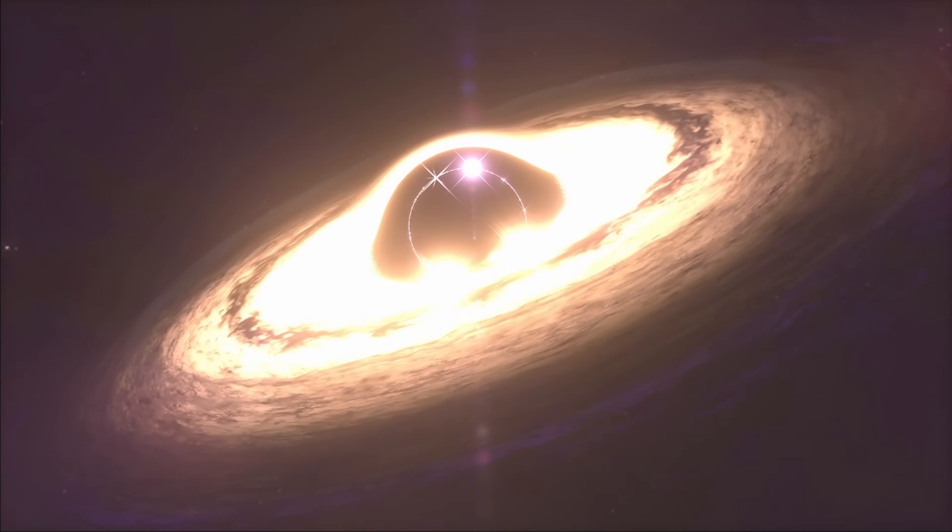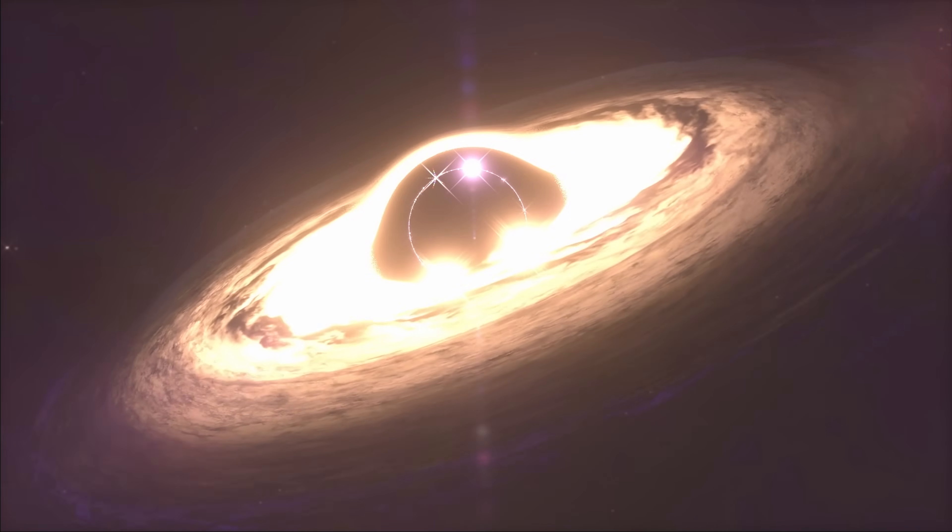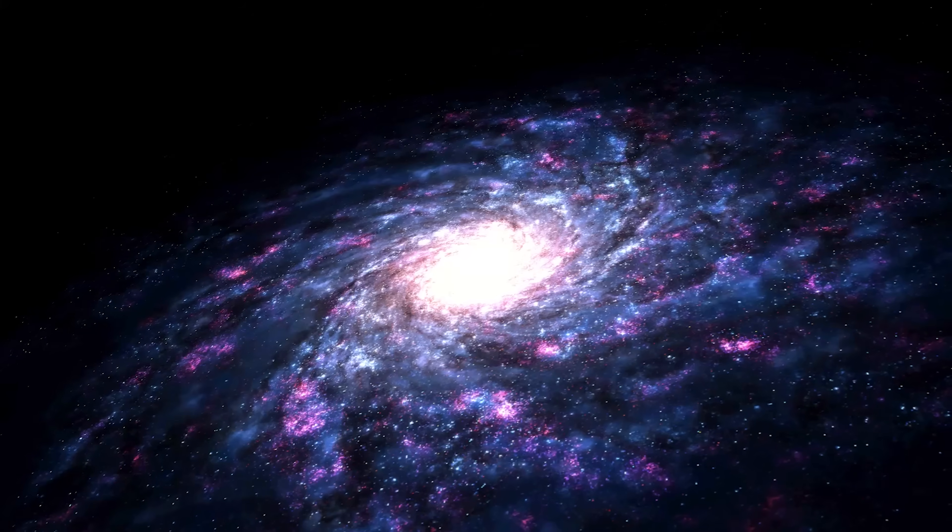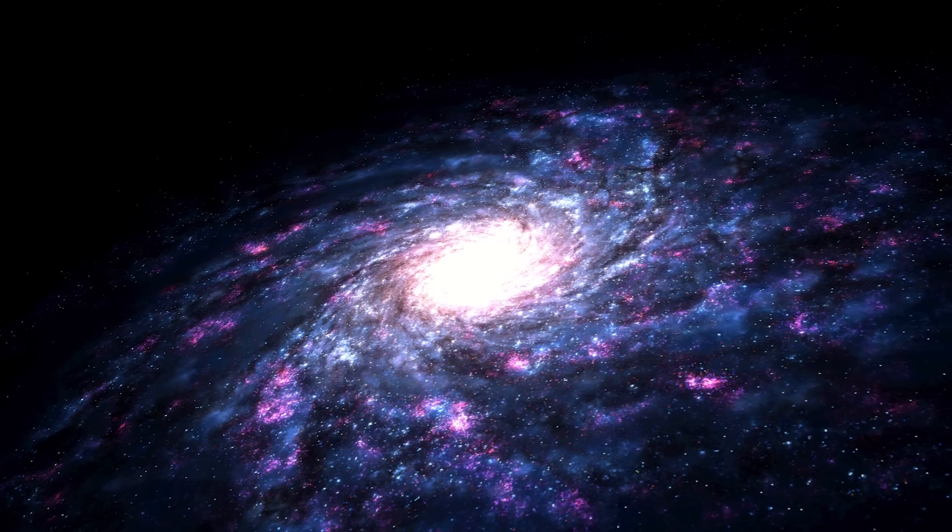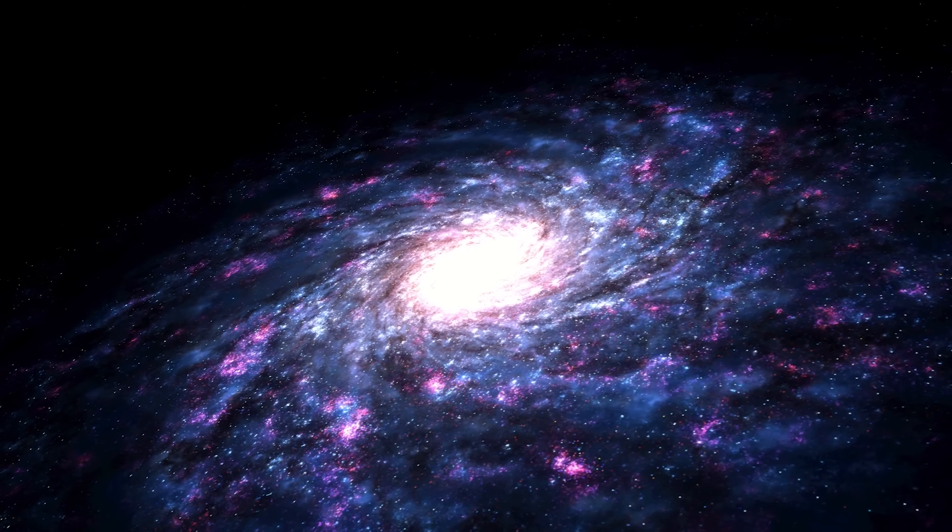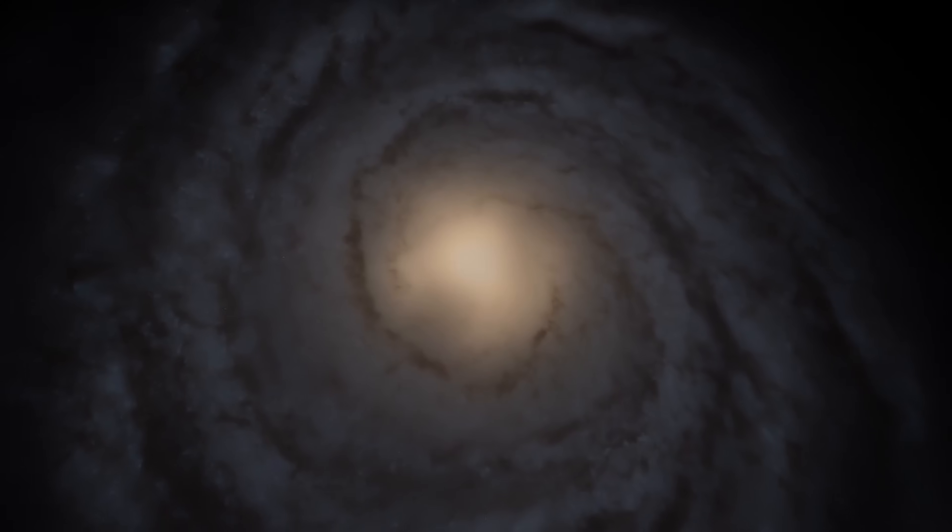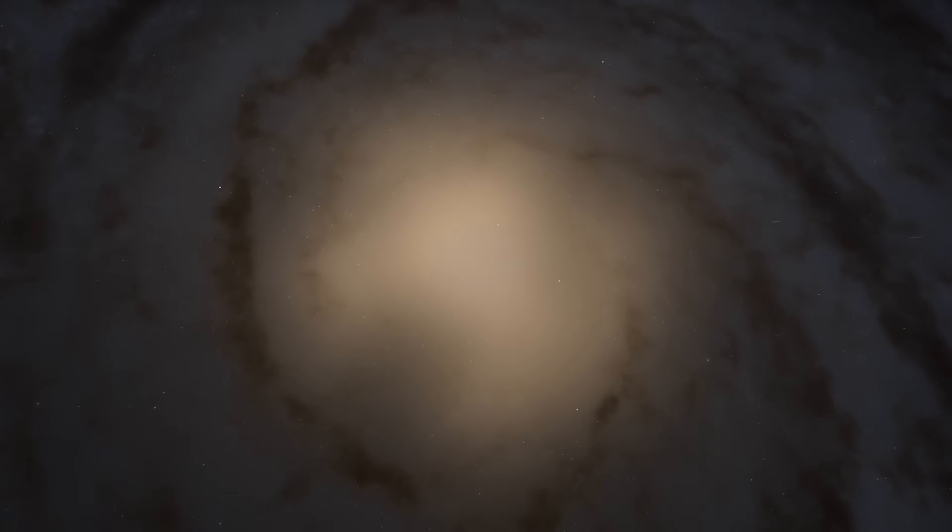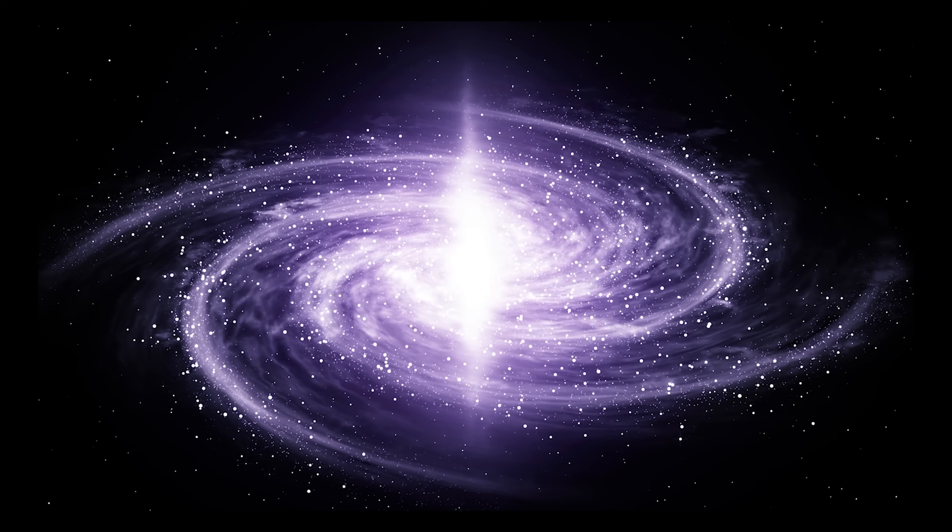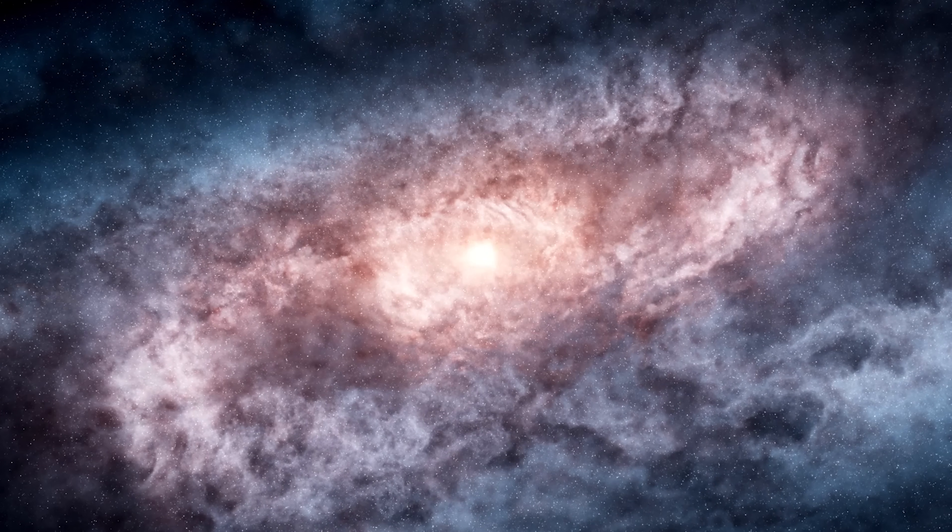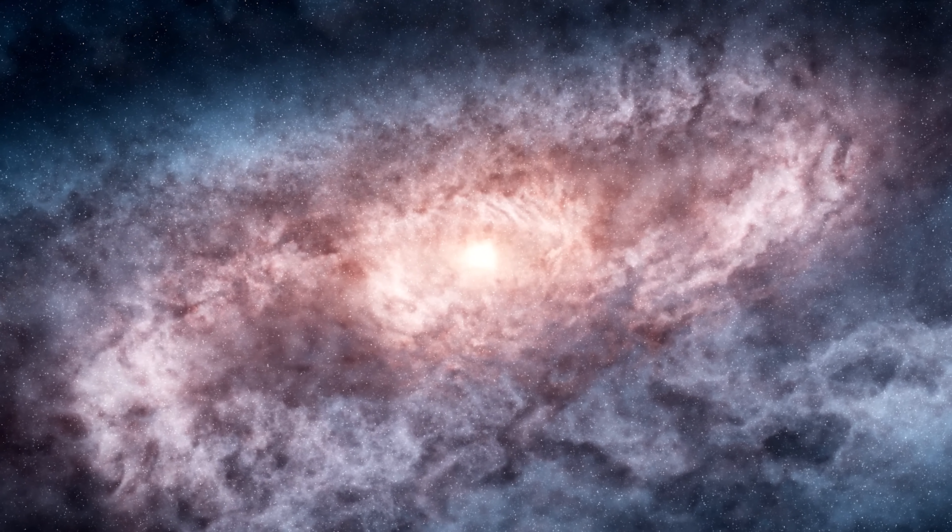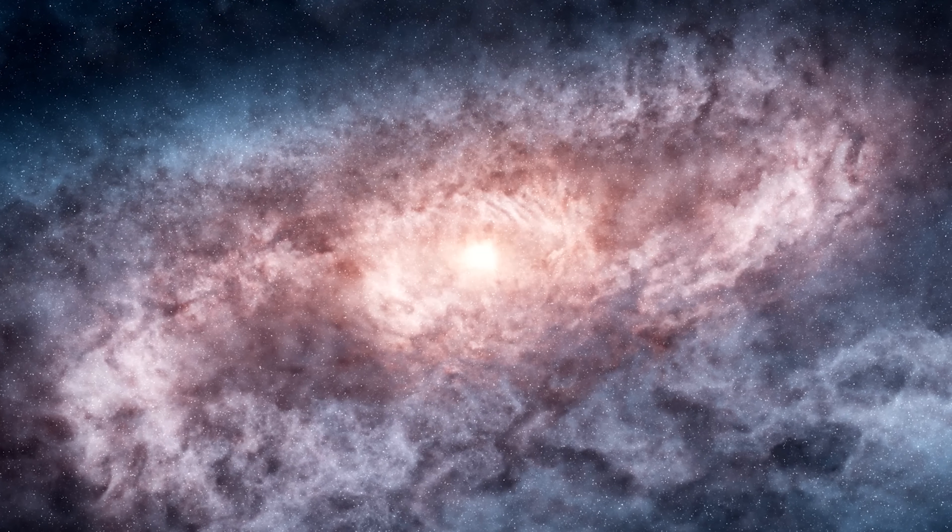As if that weren't enough, some scientists are exploring an even more radical idea. What if our universe exists inside a black hole? Recent studies suggest that most galaxies appear to rotate in the same direction. By analyzing spiral arm curvature, astronomers can determine galactic spin, and the pattern doesn't seem random. In a truly random universe, spins should be evenly split between directions, but they aren't. This unexpected alignment hints that the universe may have a preferred direction, something current cosmological models don't predict.